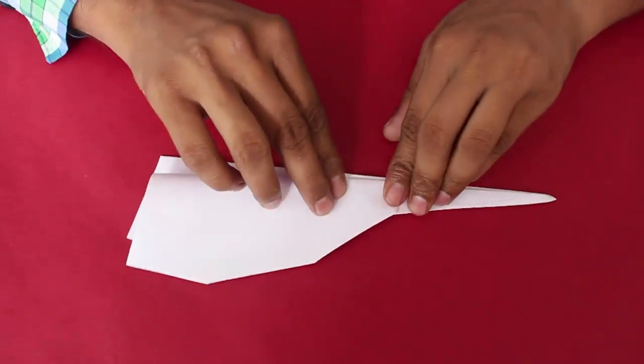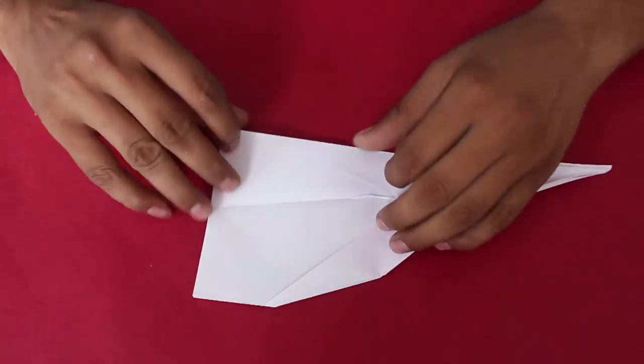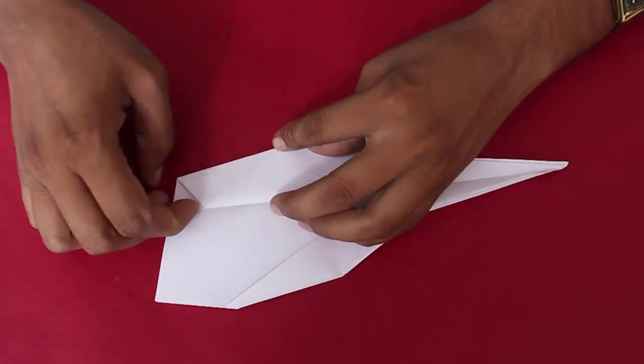Once again fold the nose along with the wings to make the model narrower and skewed.